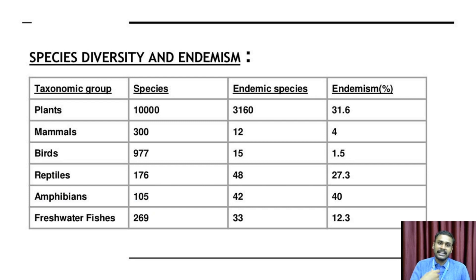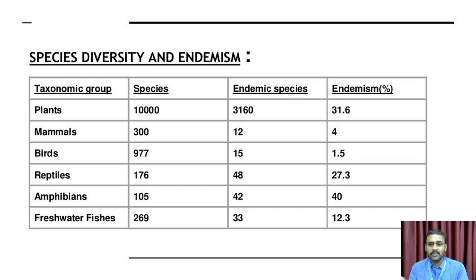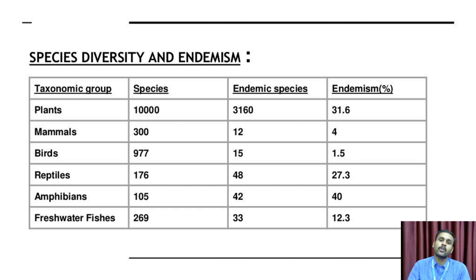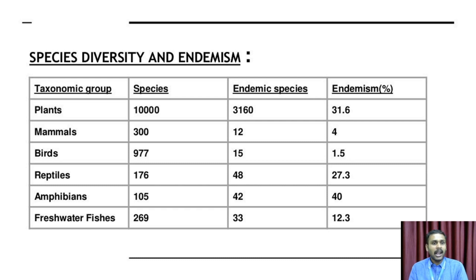For species diversity and endemism in the Himalayan hotspot: among amphibians, 40% are endemic; among plants, 31.6% are endemic. There are around 176 amphibian species and 105 other species that need protection.